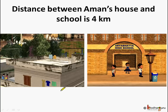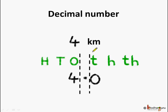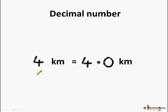Now let us see a problem. The distance between Amund's house and his school is 4 kilometers. Let us convert it to a decimal number. 4 kilometers means we put 4 at the ones place as there are just 4 kilometers and no fractional parts. So we will put 0 after the point. Hence, 4 kilometers is equal to 4.0 kilometers. Here, 4 kilometers is represented as 4.0 kilometers in the form of a decimal number.